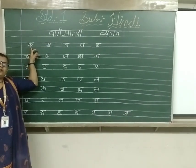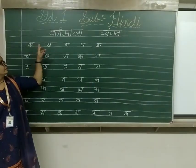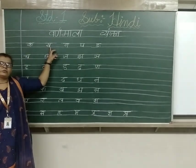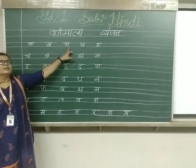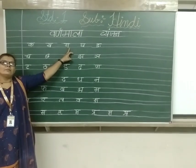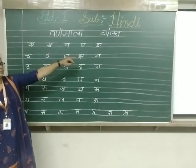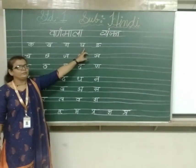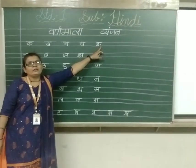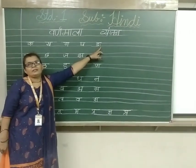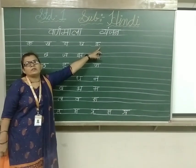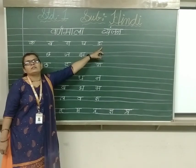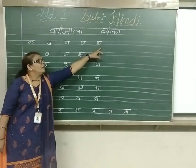क से कबूतर, ख से खरगोश, ग से गमला, घ से घड़ा. अं (Anusvara) — Anusvara se khud verse nahin banta hai, par haang verse ke paas use karte hain.